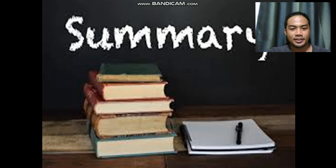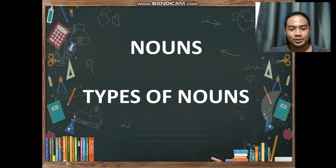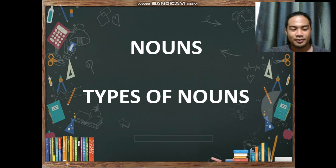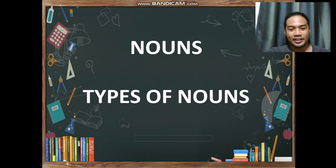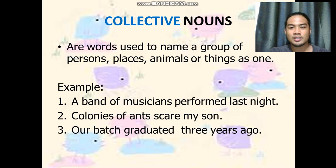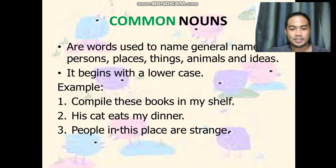As a summary of our lesson for today — what are nouns and the types of nouns? A noun is a name of a person, place, idea, and more. The different types of nouns are: proper nouns, abstract nouns, concrete nouns, common nouns, and collective nouns.